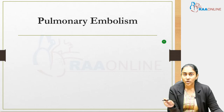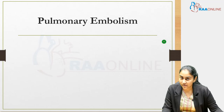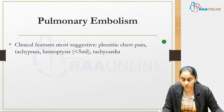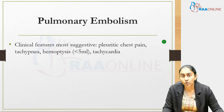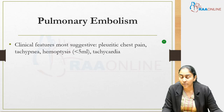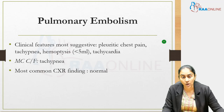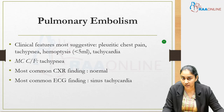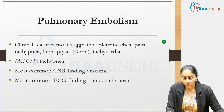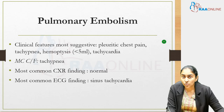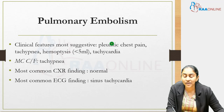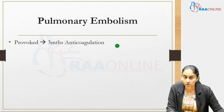Pulmonary embolism is a hot favourite topic for MRCP Part 1. The clinical feature most suggestive of PE is pleuritic chest pain, followed by tachypnea, hemoptysis, and tachycardia. However, the most common clinical feature is tachypnea, the most common chest X-ray finding is a normal chest X-ray, and the most common ECG finding is sinus tachycardia.